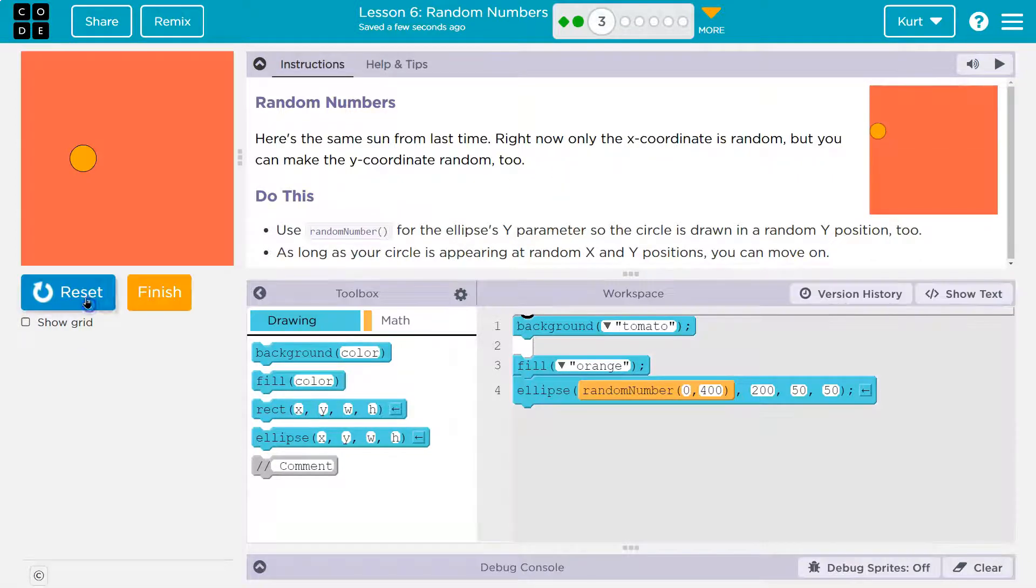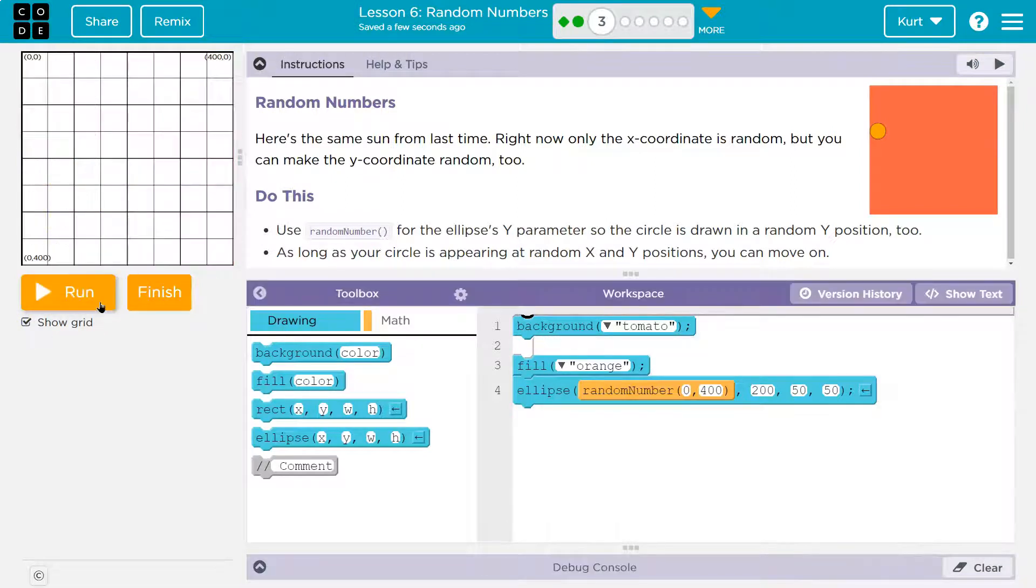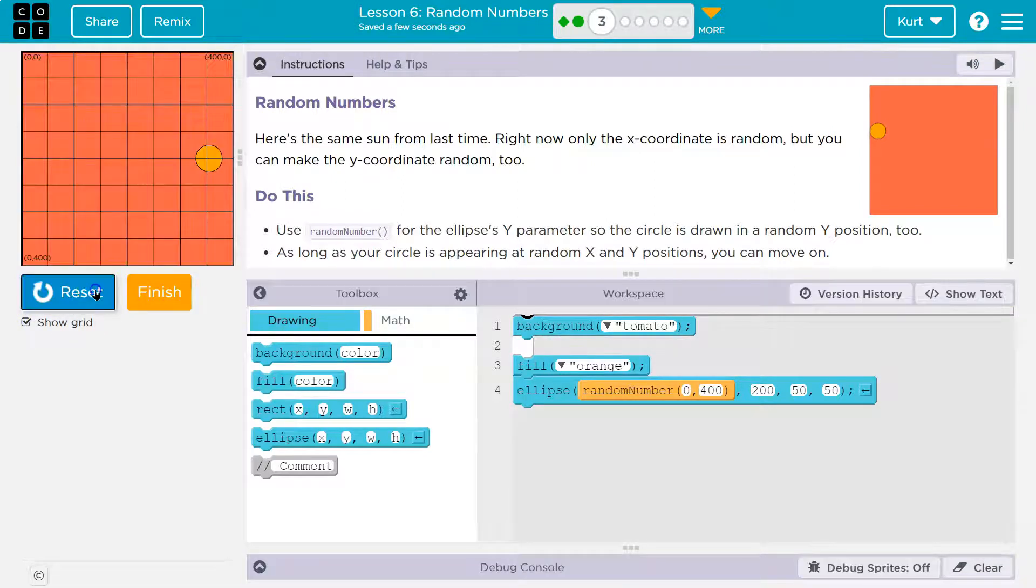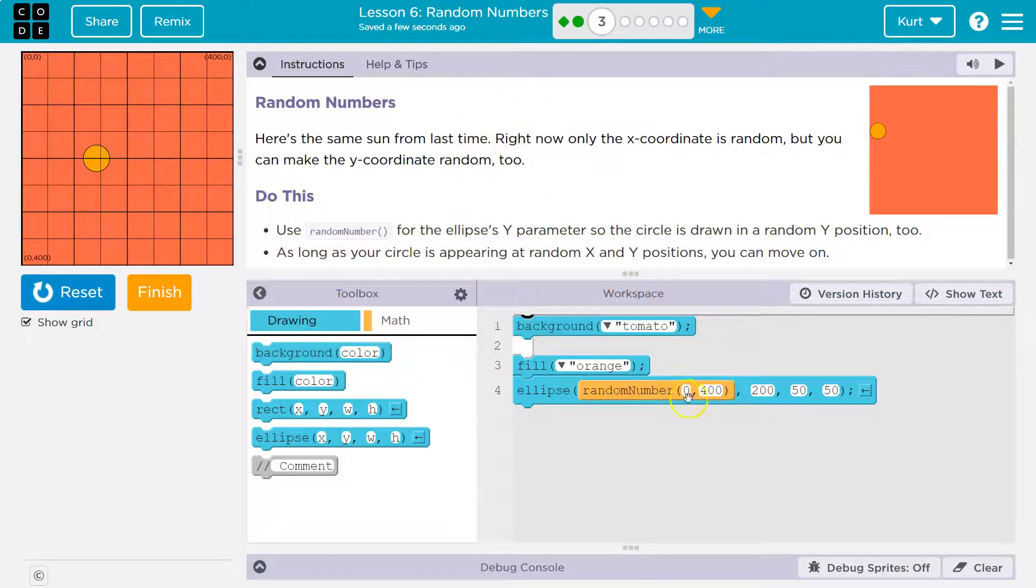Well, first let's run. I'm going to hit show grid and let's see what they mean. Oh yeah, you see how the sun or the circle, whatever this thing is, the x-coordinate is random because it doesn't pop anywhere left and right. And if you look, it can be in between 0 and 400.